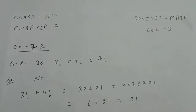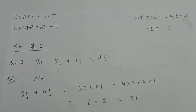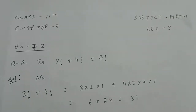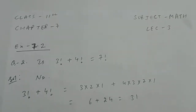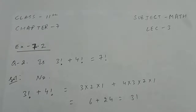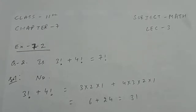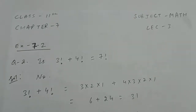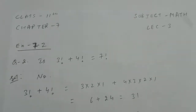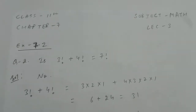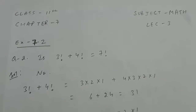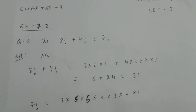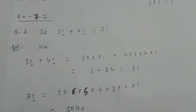Good morning students, this is Class 11th Maths lecture 3rd of Chapter 7 - Permutations and Combinations. I have given you homework exercise 7.2. Now see question number 2 of exercise 7.2.